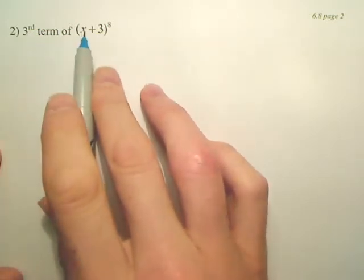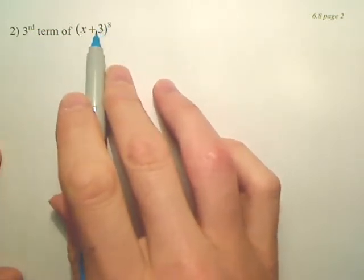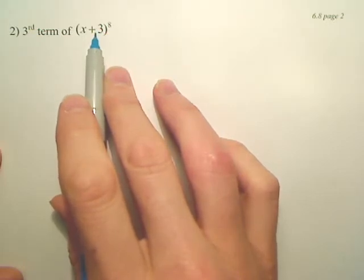Class, if I wanted to find the third term of this, you could do a whole bunch of foiling, which would be stupid. You could use binomial theorem, which is the best move.